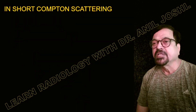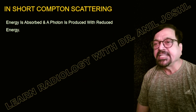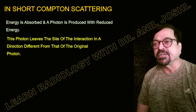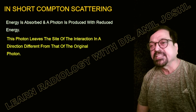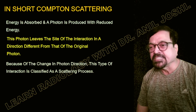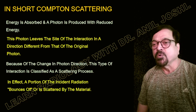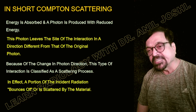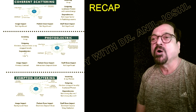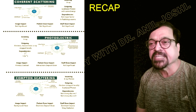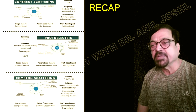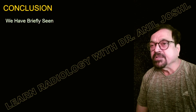In summary, in Compton scattering, energy is absorbed and a photon is produced with reduced energy. This scattered photon leaves the site of interaction in a direction different from that of the original photon. Because of the change in photon direction, this type of interaction is classified as a scattering process. In effect, a portion of the incident radiation bounces off or is scattered by the material. A summary chart covering all three interactions — coherent scattering, photoelectric effect, and Compton scattering — is shown here for a better grasp of the material.